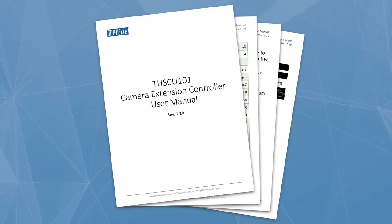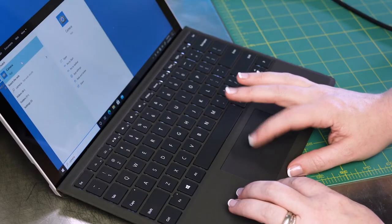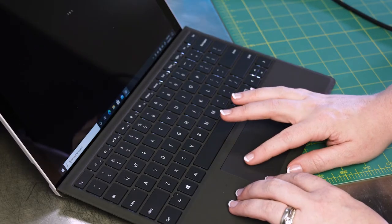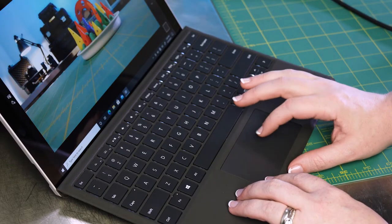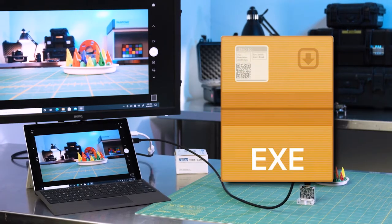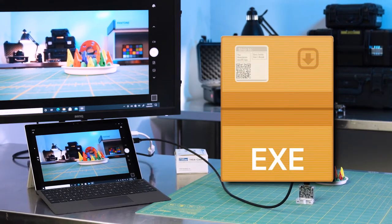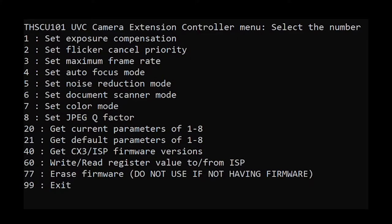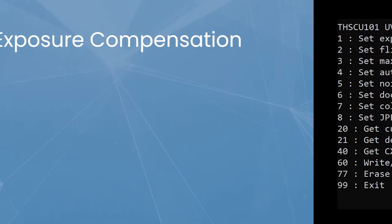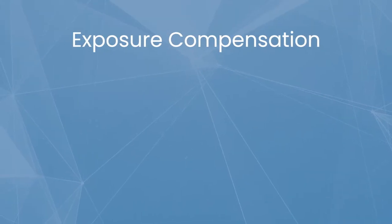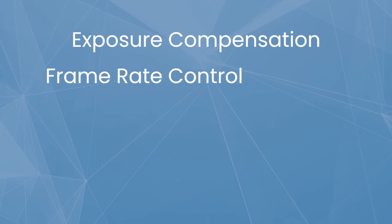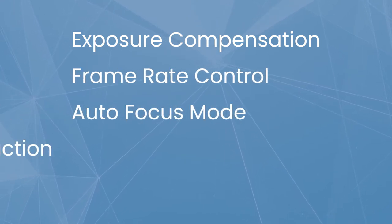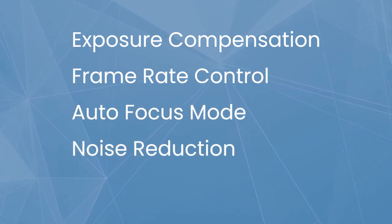Refer to the manual for instructions. With the Thea camera connected to the computer and the image streaming in the camera application, double-click on the .exe file that was downloaded. Within this program, you can easily change parameters like exposure compensation, frame rate, autofocus, noise reduction, and color mode.